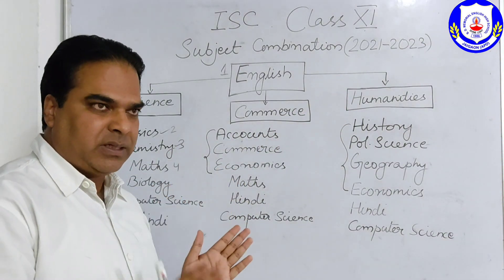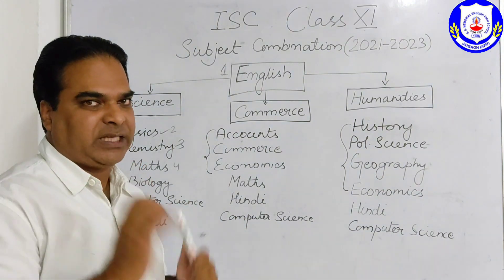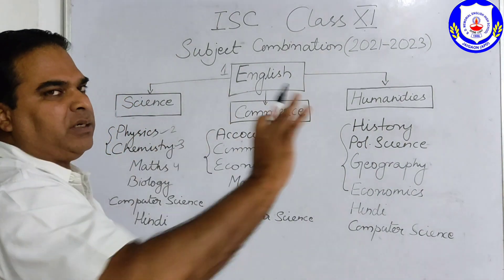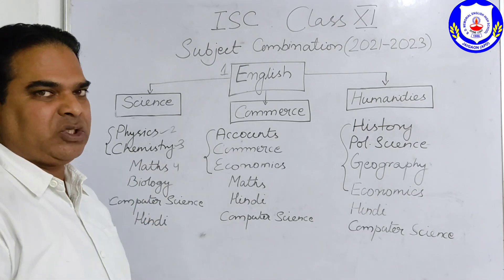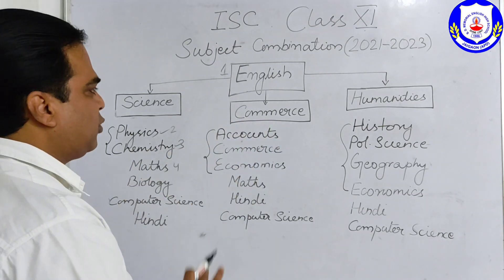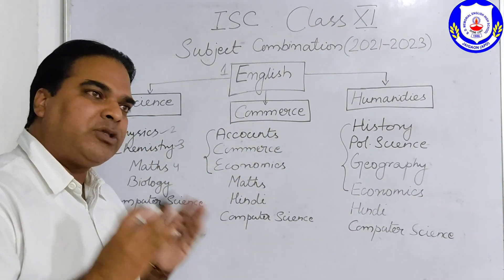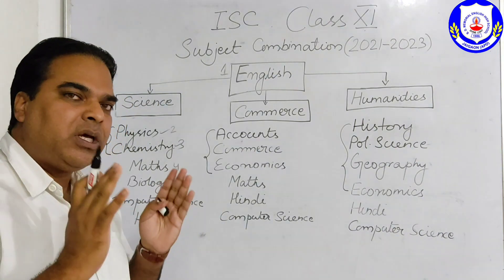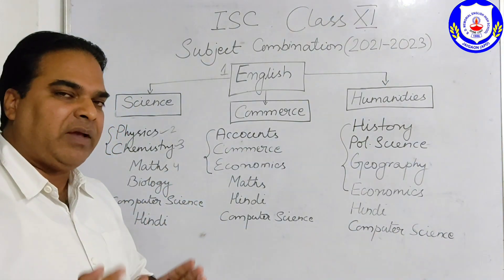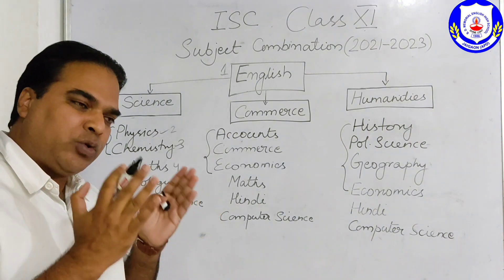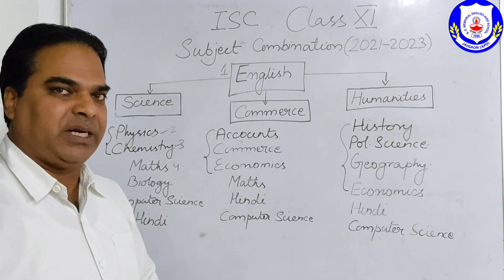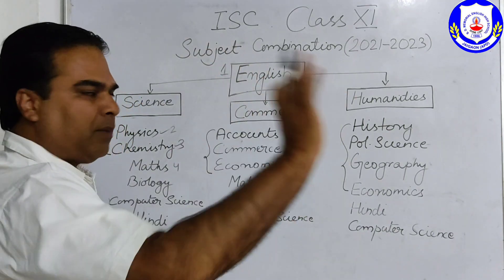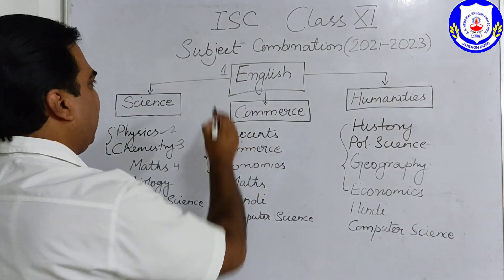English is compulsory in all three streams — English is a must. Including English, you can choose four or five other subjects, so altogether you can choose five or six subjects including English. English is very, very compulsory.